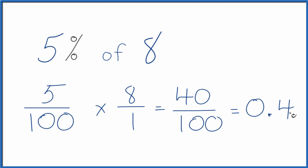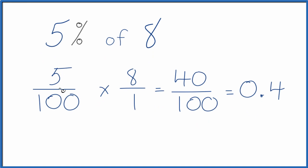So 5% of 8 is 0.4. The other way to think about this is that 5 divided by 100 is 0.05, and we just multiply that times 8 and we would get 0.4.